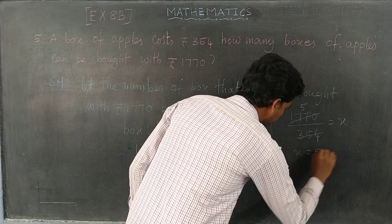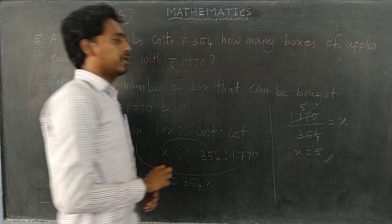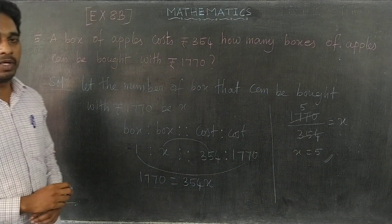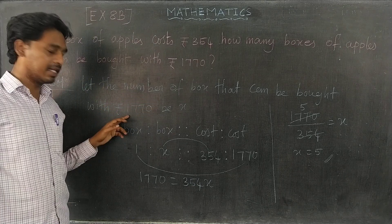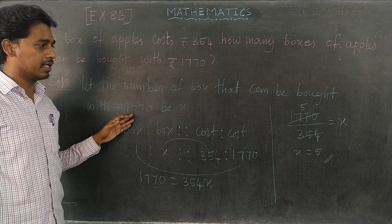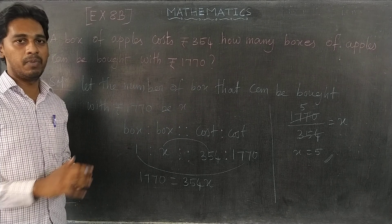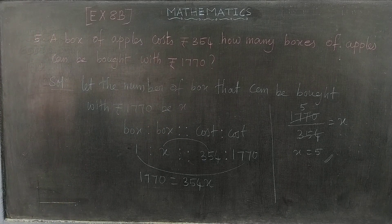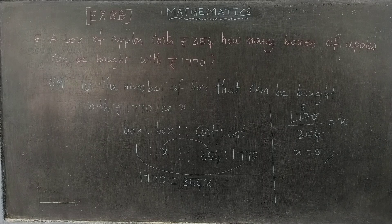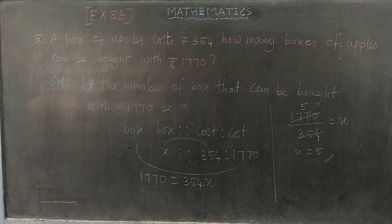x equals 5. So with Rs. 1770, 5 boxes of art pills can be bought.